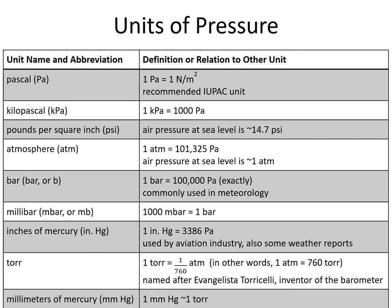One torr is equal to 1/760 atmospheres; in other words, one atmosphere is equal to 760 torr. This is a very important and common conversion we'll use in this chapter. The torr is named after Torricelli, the inventor of the barometer. Our last unit is millimeters of mercury — one millimeter of mercury is approximately the same as one torr, so they'll be used interchangeably.